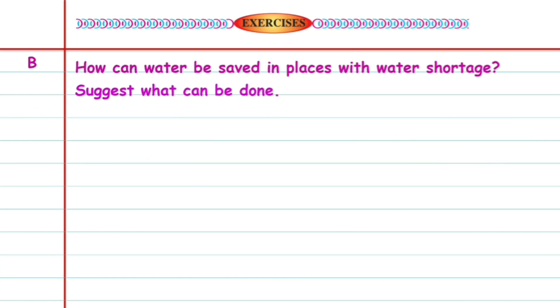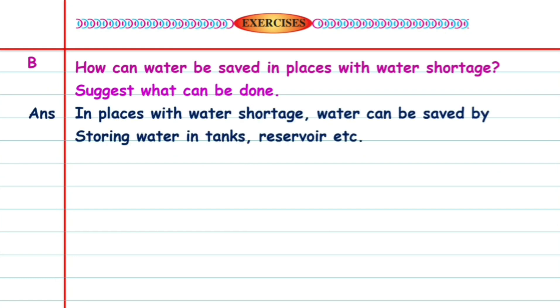B. How can water be saved in places with water shortage? Suggest what can be done. Answer: In places with water shortage, water can be saved by storing water in tanks, reservoirs, etc.